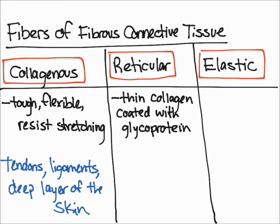Reticular fibers tend to be thinner than collagen. They are essentially thin collagen fibers coated with glycoprotein. So the difference between collagenous fibers and reticular fibers is that collagenous fibers are a little thicker, reticular fibers are a little thinner, and reticular fibers are coated with glycoproteins. Another thing about reticular fibers is that they sometimes form a sponge-like framework in some organs.